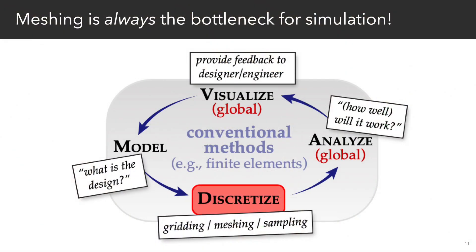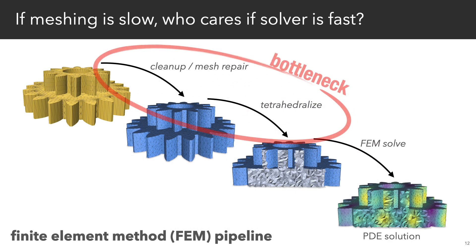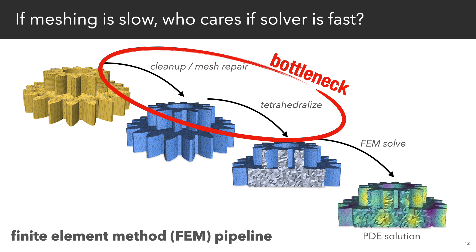Unfortunately, engineering design cycles today are bottlenecked not by visualization, but by the need for a high-quality discretization for simulation, which is memory-intensive and difficult to parallelize. So if we spend all of our time converting our domain into a mesh that's sim-ready, then that completely defeats the purpose of having faster accurate finite element solvers, which are currently the de facto tools for simulating high-fidelity physics.